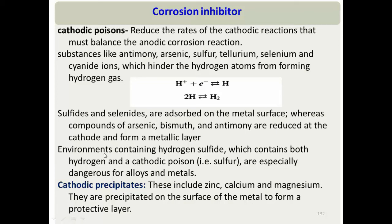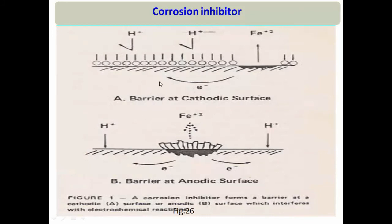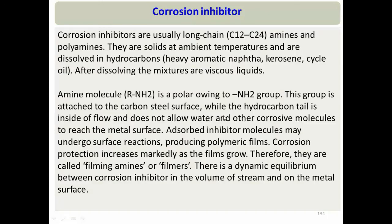Another type of cathodic inhibitor is a cathodic precipitator: the cathodic reaction produces OH⁻ ions, which react with metal ions in the inhibitor to form an insoluble metal hydroxide passive film on cathodic areas. This passive film prevents H⁺ from reaching the metal surface, stopping the cathodic reaction. Similarly, anodic passive film prevents Fe²⁺ from going into solution, dramatically reducing corrosion rate.